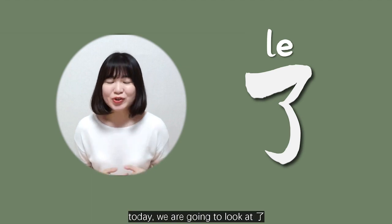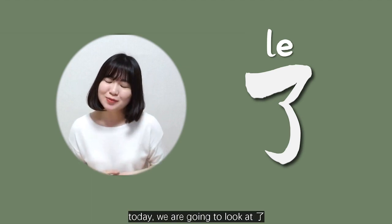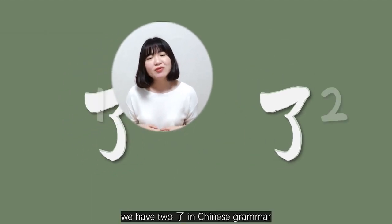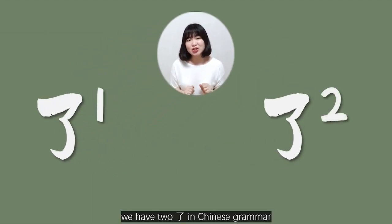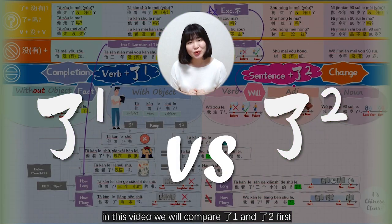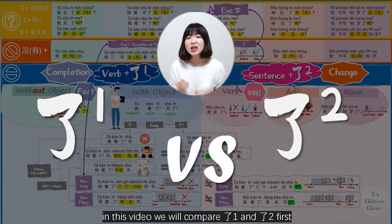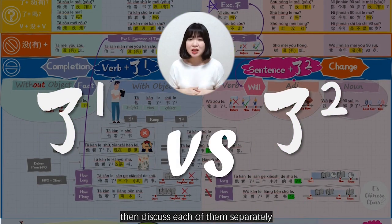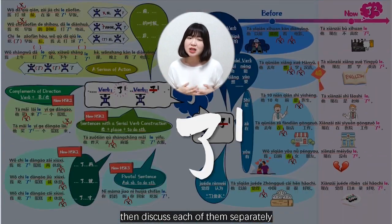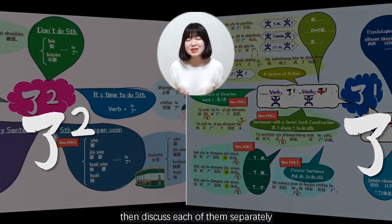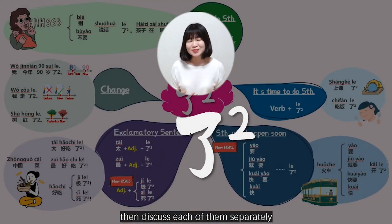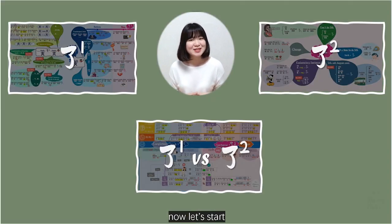Today we are going to look at 了. We have two 了 in Chinese grammar. In this video, we will compare 了1 and 了2 first, then discuss each of them separately. Now let's start.